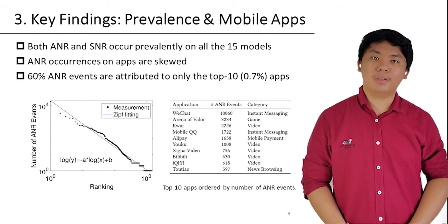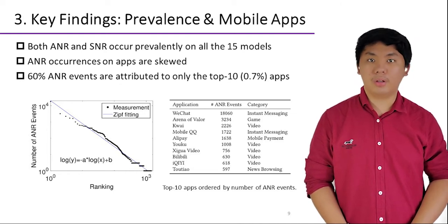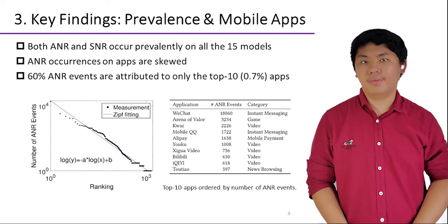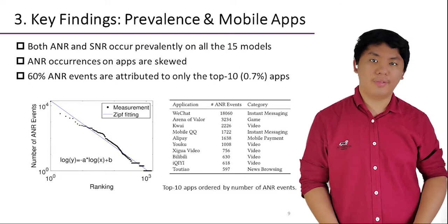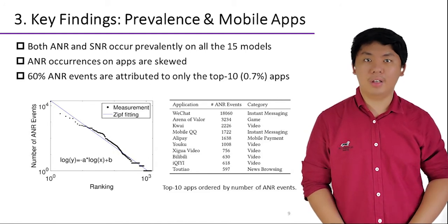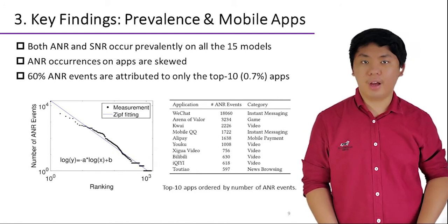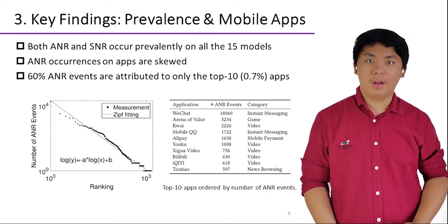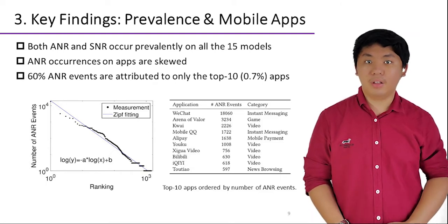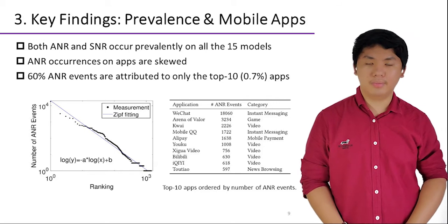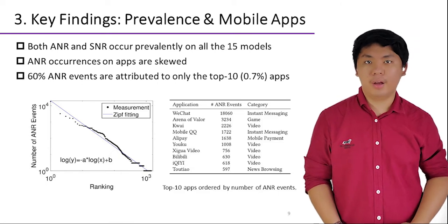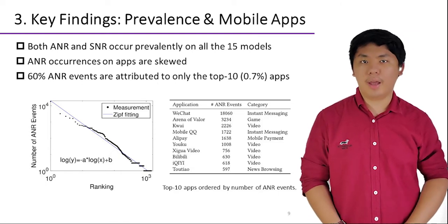With these efforts in large-scale data collection and automatic analysis, we have multiple findings on ANR and SNR in terms of their prevalence, characteristics, and root causes. First, our measurement reveals that both ANR and SNR occur prevalently on all 15 studied phone models. On average, 29% of Android systems encounter at least one ANR or SNR event every 10 days. Also, we capture a total of around 15,000 ANR events involving around 1,500 Android apps. However, ANR event distributions are quite skewed, with 60% of ANR events attributed to only the top 10 apps. In general, video streaming and 3D interactive gaming apps are more likely to encounter ANR.